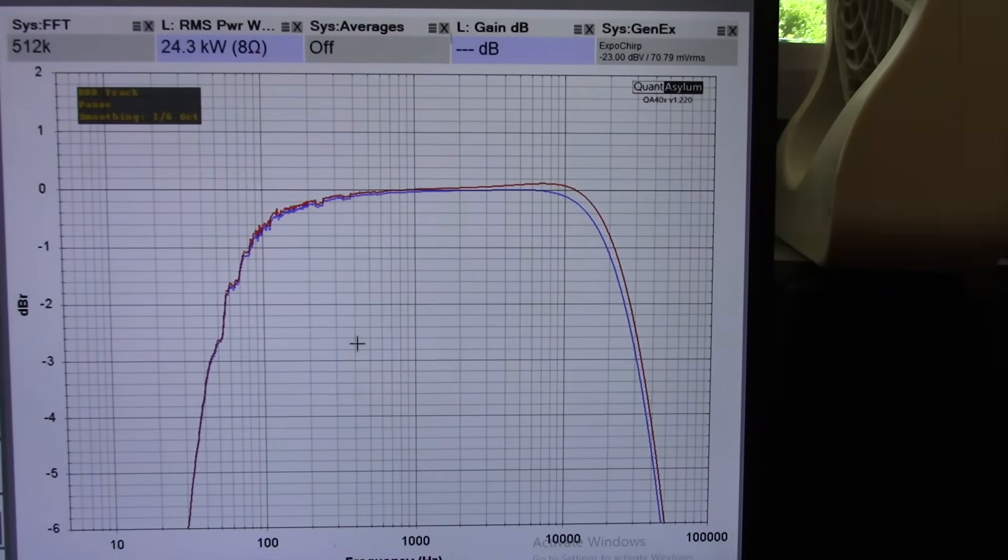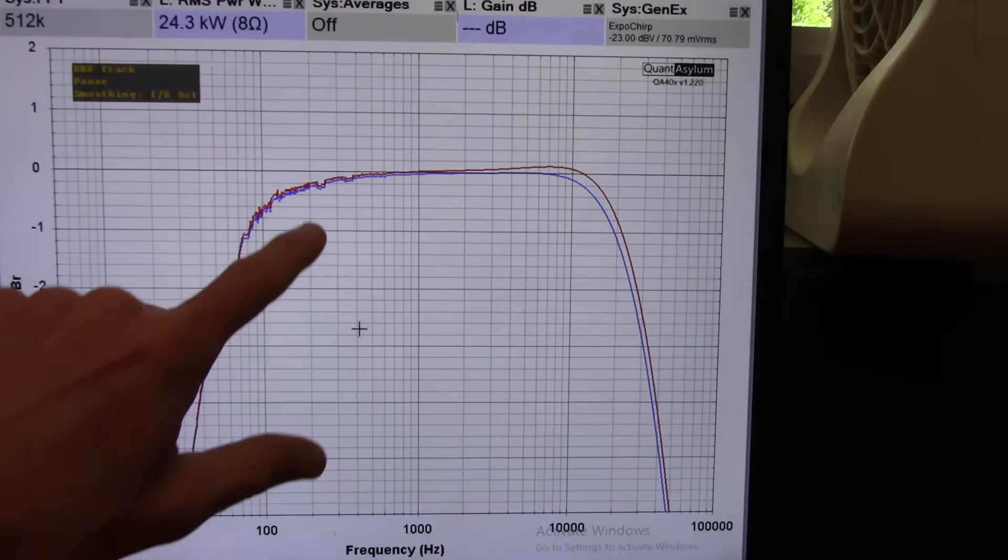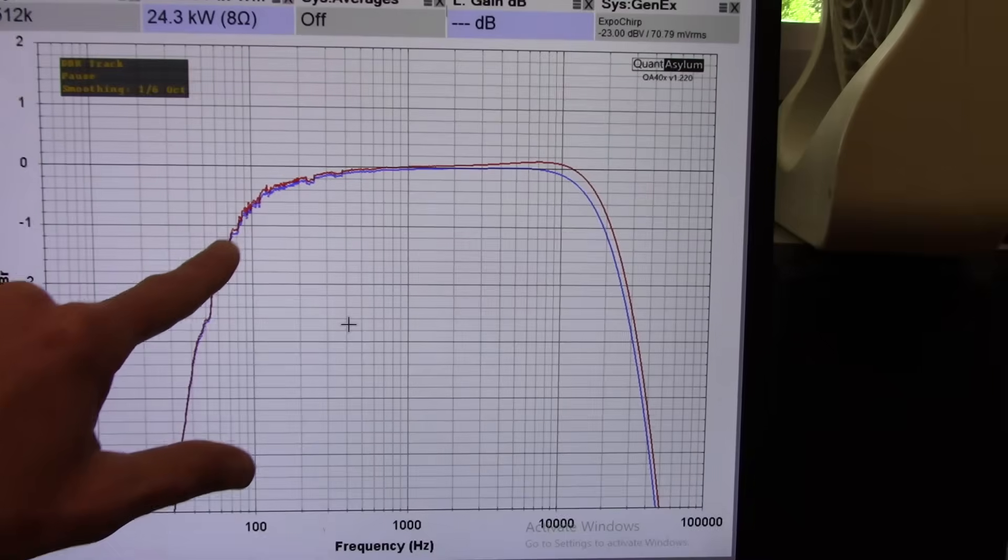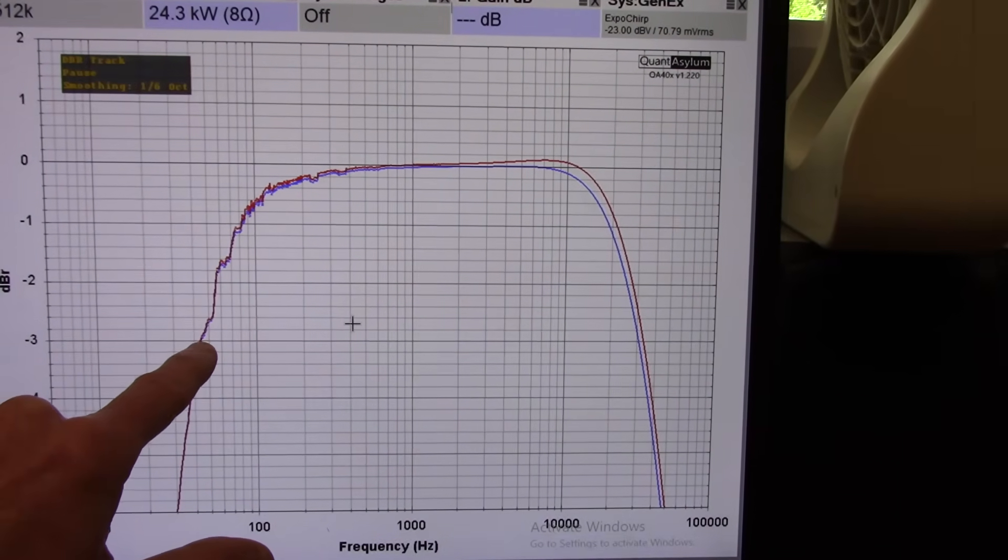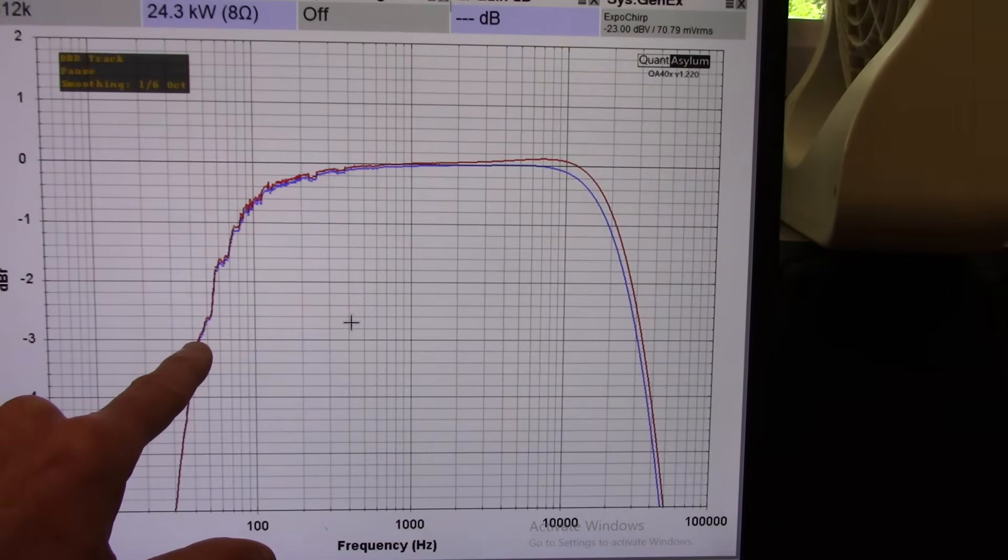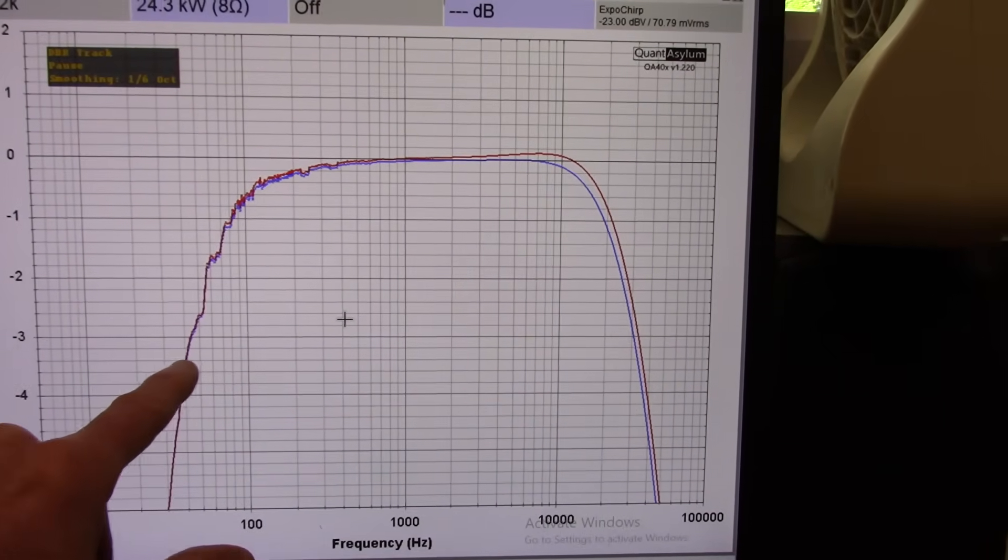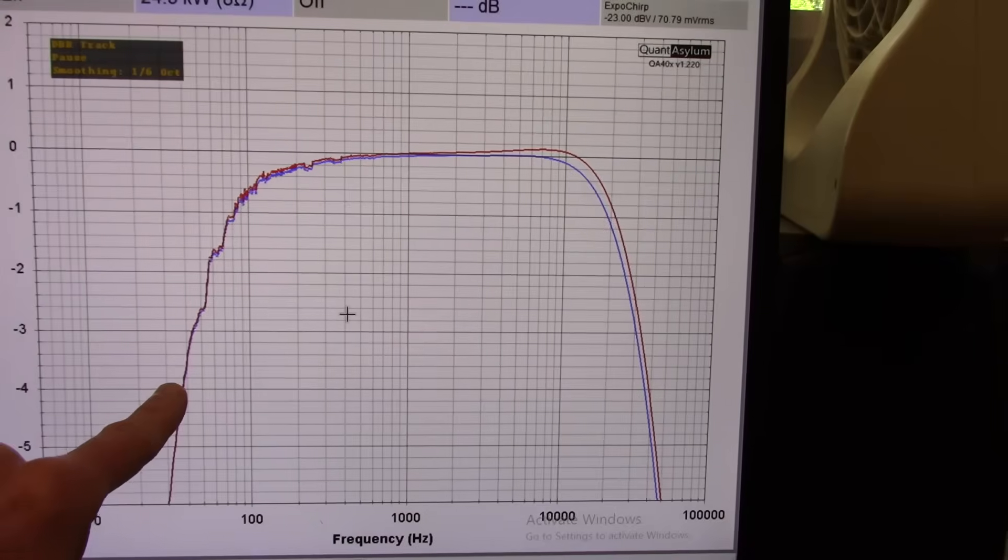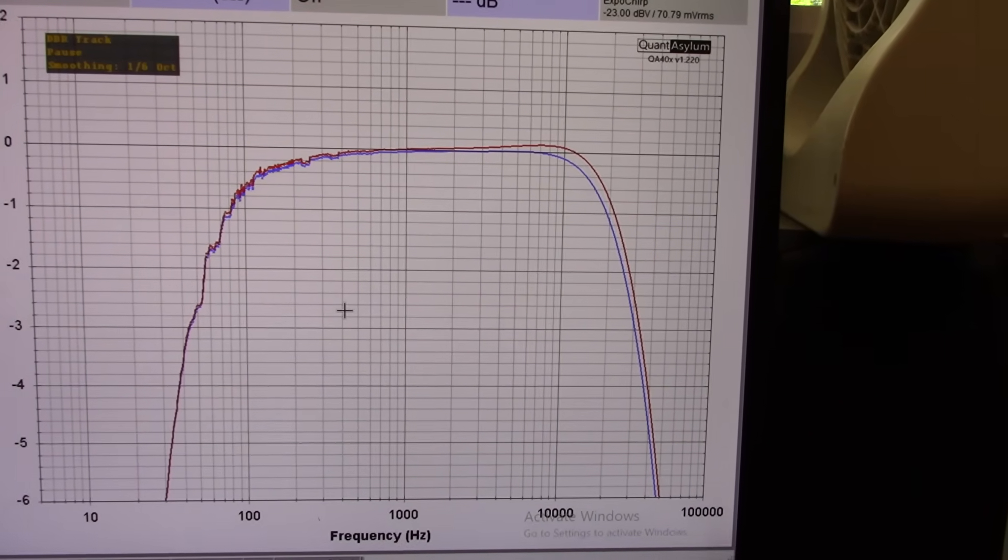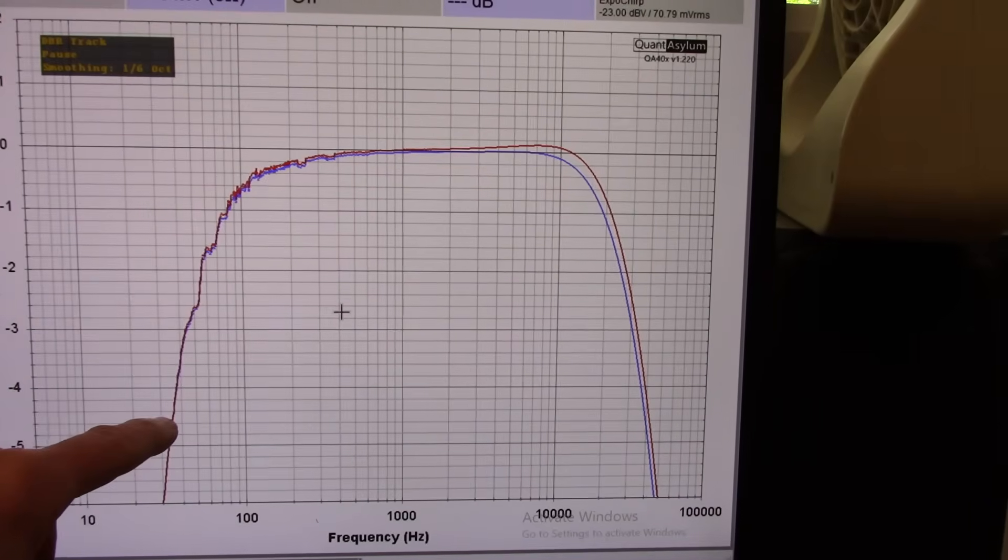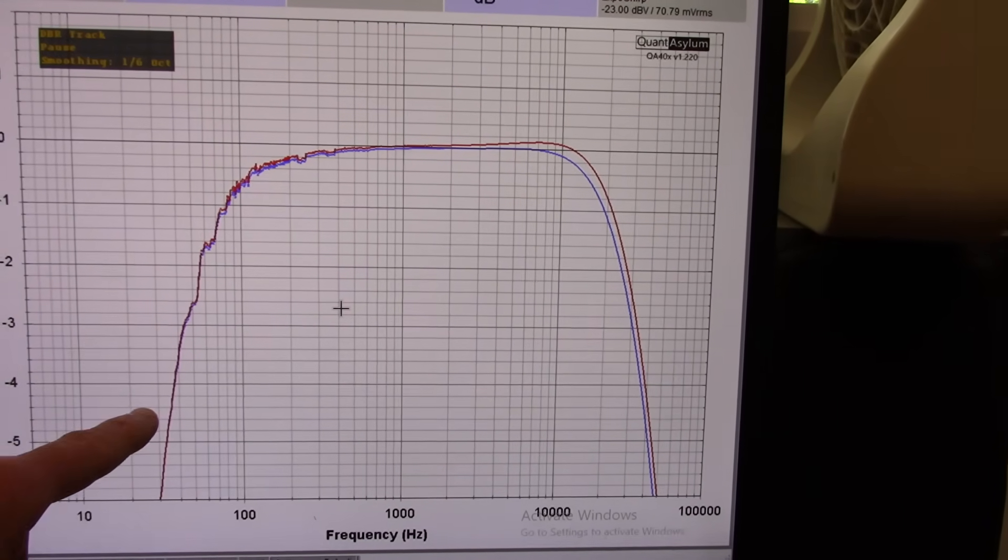Also testing the amp at 4 ohm loads. It's not really designed for that. As you can see, we are rolling off here 3 dB down at probably like 43 hertz. High end's about the same, but we're rolling off early, probably due to the output coupling capacitors. There are 1,000 microfarads, and that's going to cause you to lose response at the lower frequencies.